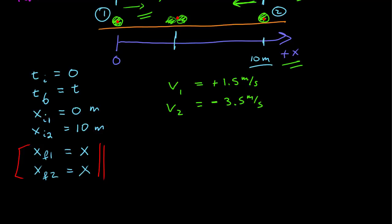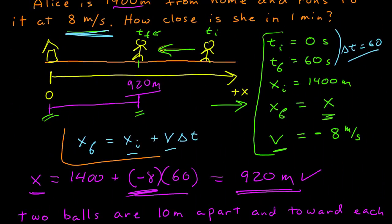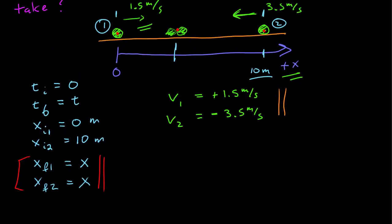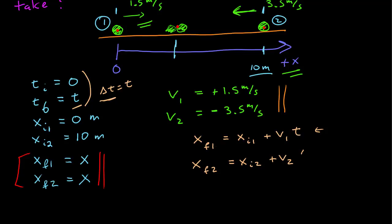Uniform motion applies since both objects have constant velocity. Our uniform motion relationship gives us equations for each object. The final position of ball 1 equals the initial position of ball 1 plus the velocity of ball 1 times the time interval. The final position of ball 2 equals the initial position of ball 2 plus the velocity of ball 2 times the same time interval. The time interval is the same for both particles.